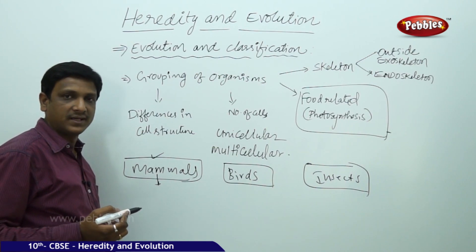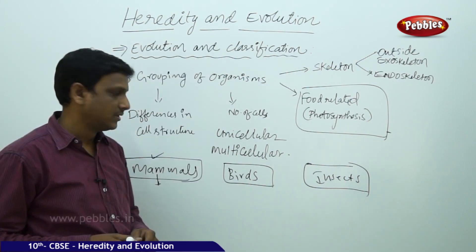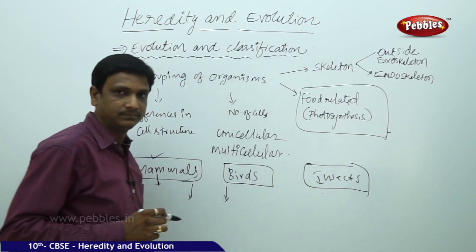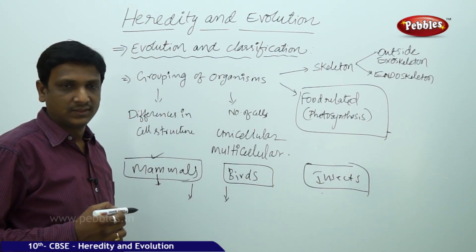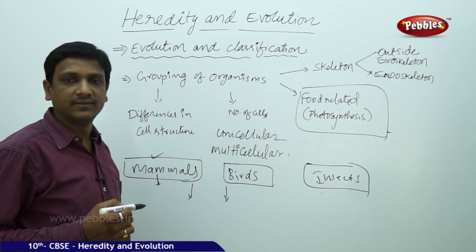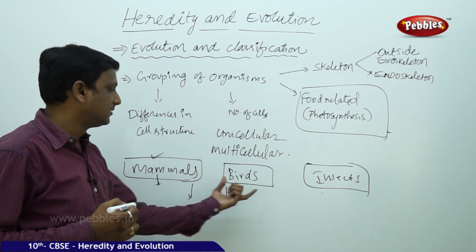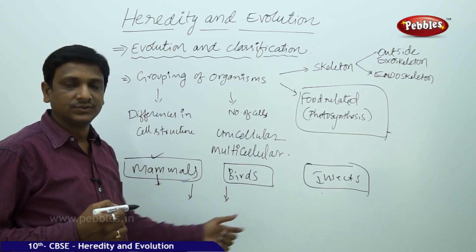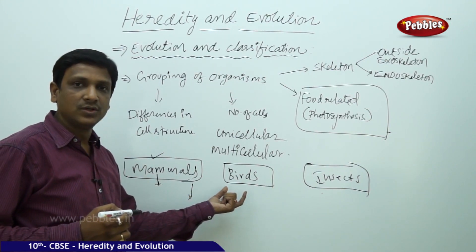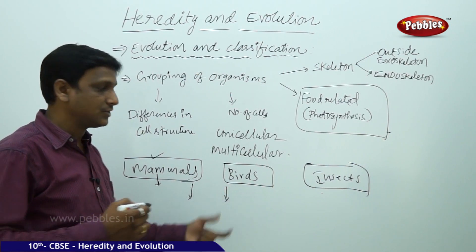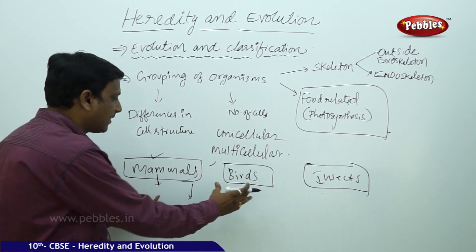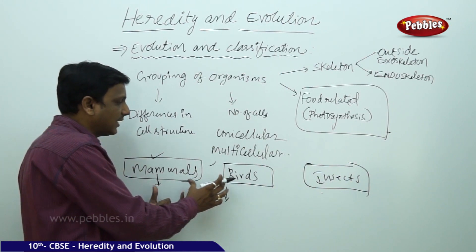Comparing mammals, birds, and insects: you find more similarities between mammals and birds compared to insects. Both mammals and birds have an endoskeleton. Blood is red in color in both. Both have four limbs — mammals have two hands and two legs; birds have two wings and two legs. So you find similarities. Birds are somewhat more closely related to mammals compared to insects.